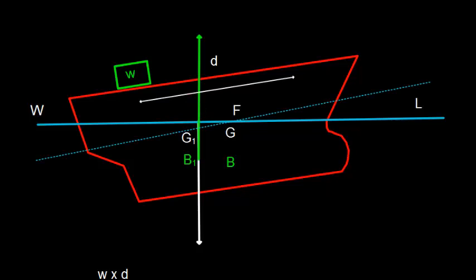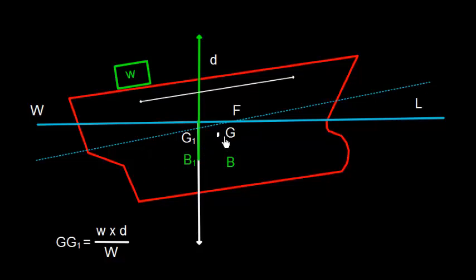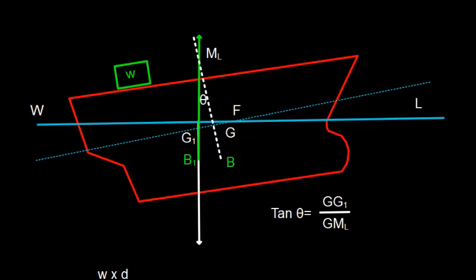This weight is shifted from forward to aft with distance D. So the shift in the center of gravity, GG1, is equal to small w into D divided by capital W, where small w is the weight, D is the distance shifted, and capital W is the displacement of the ship. We also note that tan θ is equal to GG1 divided by GML.